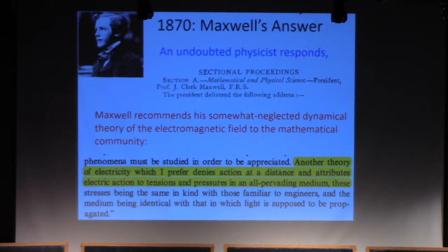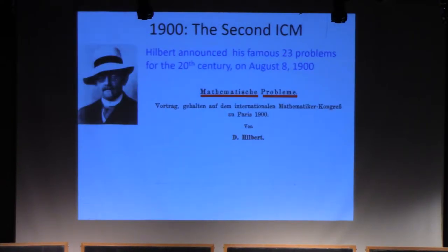That situation began to change around the turn of the 20th century. At the first International Congress of Mathematicians in Zurich, Henri Poincaré chose as his topic the relation of physics to mathematics. He had a lot of interesting things to say about Maxwell. At the Second International Congress of Mathematicians in Paris, David Hilbert famously announced his 23 problems for the 20th century. If you haven't read this, I highly recommend it. It's a great read.